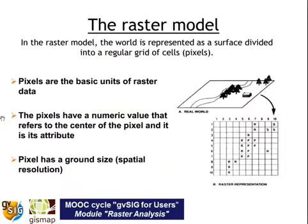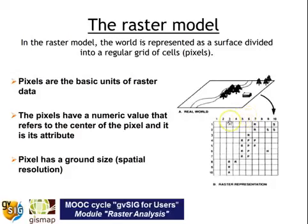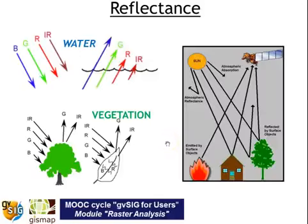Let's have a look at the raster model. The world is represented as a surface divided into a regular grid of cells. All the features on the land are represented as squared cells called pixels, and each pixel has a ground size called spatial resolution.